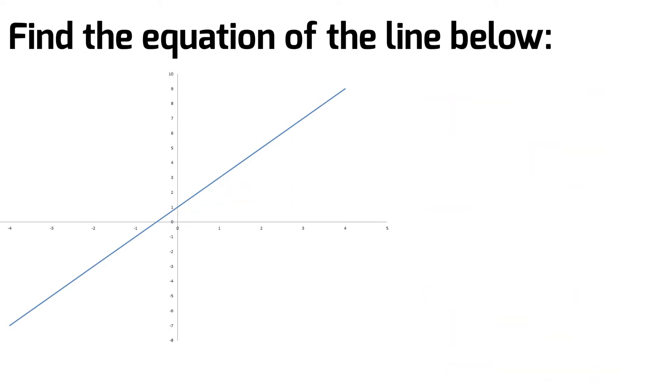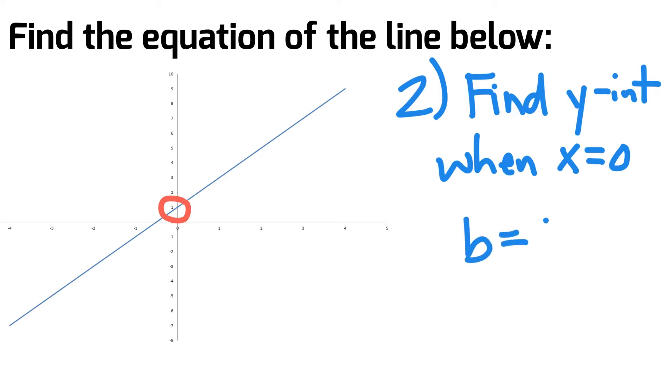The second thing to do is to find the y-intercept, which we also know as the variable b. We know that the y-intercept is where the line crosses the y-axis, or when x equals 0, what does y equal. Just from reading off our graph, we notice that it crosses the y-axis at 1, so b or our y-intercept equals 1.